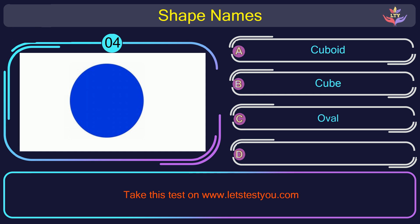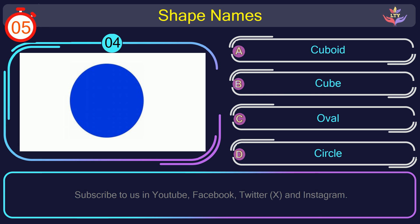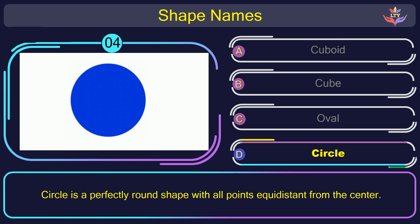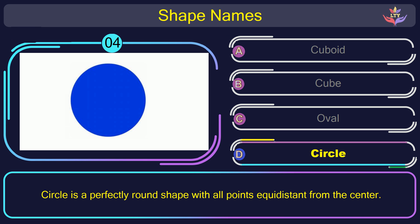Question number 4. Could you figure out the name of the shape in this picture? The correct answer is option D. Circle. Circle is a perfectly round shape with all points equidistant from the center.